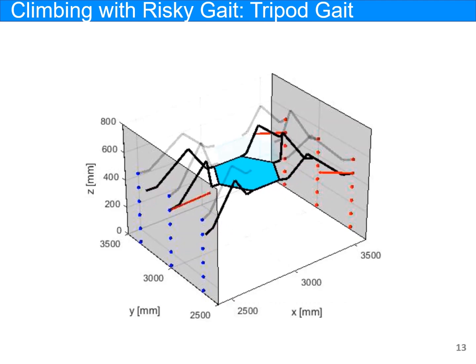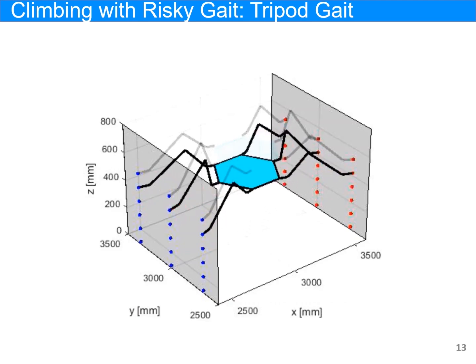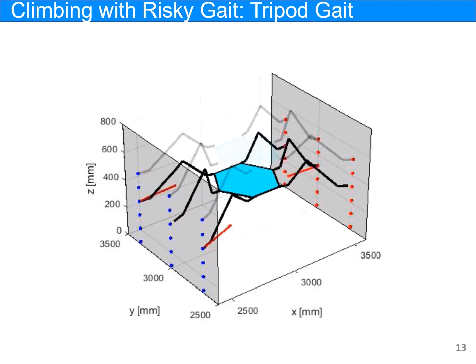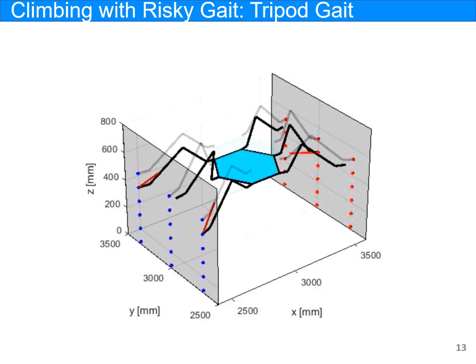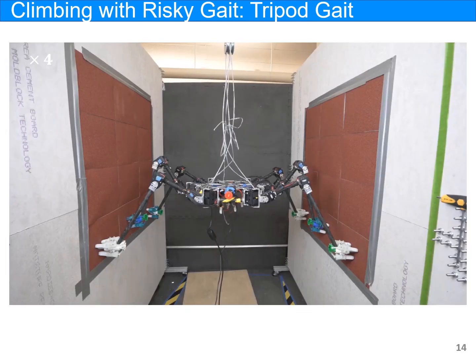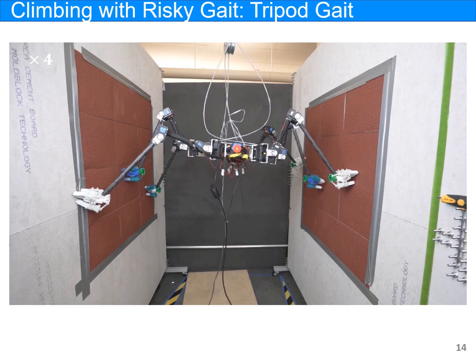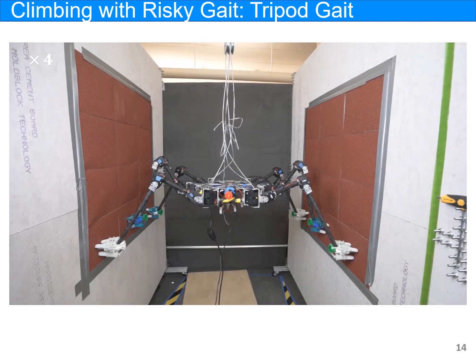Finally, we present a risky gait, tripod gait with high risk. Tripod gait is almost impossible for this robot to realize when the planner considers the worst case uncertainty. However, by taking high risk, the robot succeeds in climbing on the wall with tripod gait.